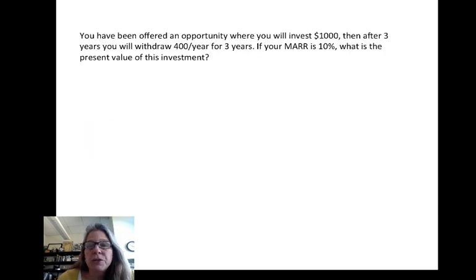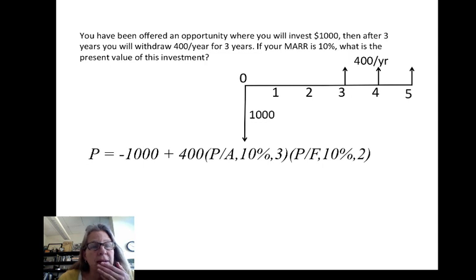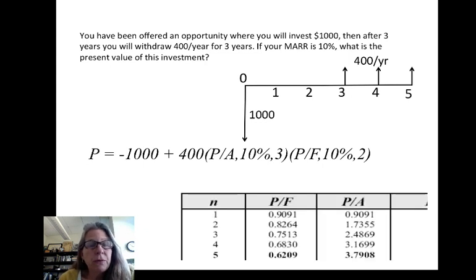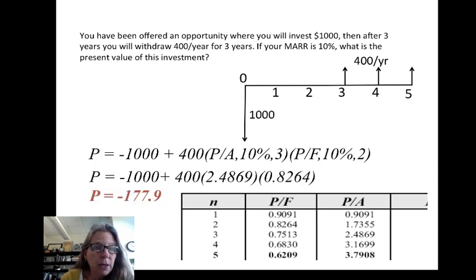That's how I'm going to do that calculation. So we'll look at this as going to be a negative 1,000 plus 400, P given A, 10% for three years, and then times P given F, 10% for two years. I hope you can think that through. It's a little complex. Definitely we will do practice problems on these in class. But then all we need to do is look up those factors in the table. So P given A, 10% for three years, we can see is 2.4869. P given F, 10% for two years, is 0.8264. So we're going to look up those factors and multiply it out, and it's minus $177.99.